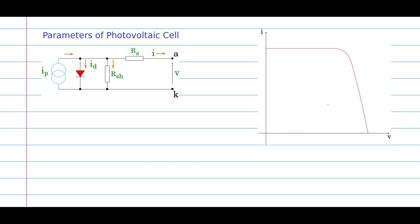Let us also have in place the IV characteristic of the PV cell — we will need this for our discussion. Now let me put down the terminal current model of the PV cell that we discussed and developed in the last clip. We now have the terminal current model also written down here. Now looking at the IV characteristic...